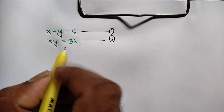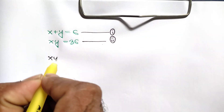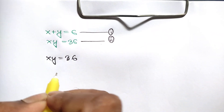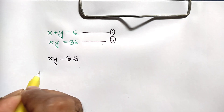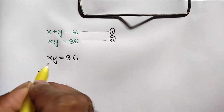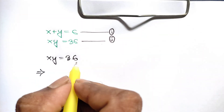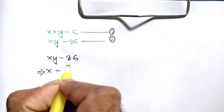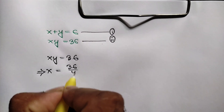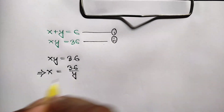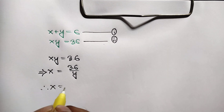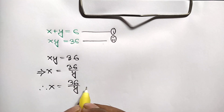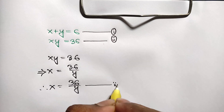Now, from equation number 2, we have xy is equal to 36. Taking y to the right side, we can get x is equal to 36 over y. So x is equal to 36 over y, and this is called equation number 3.